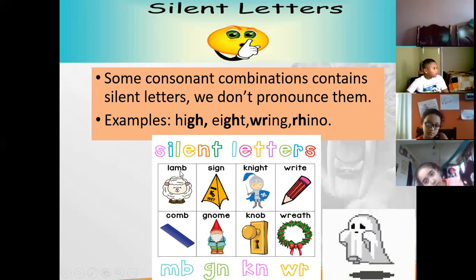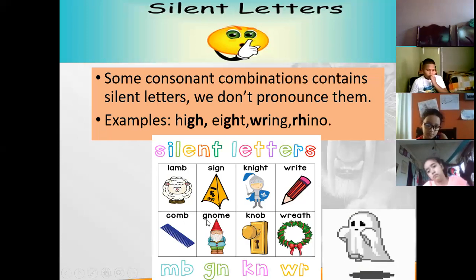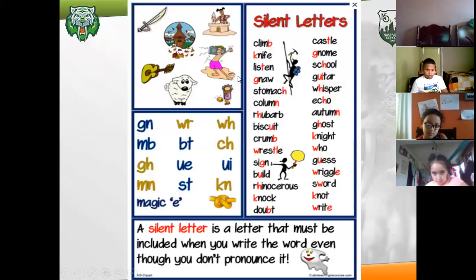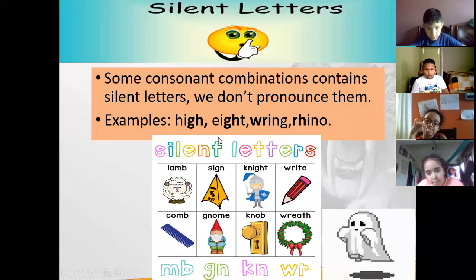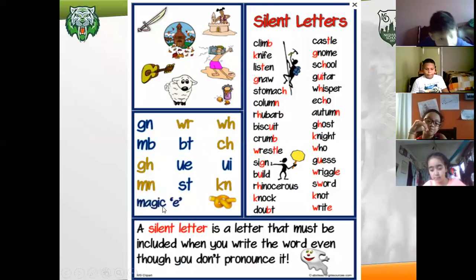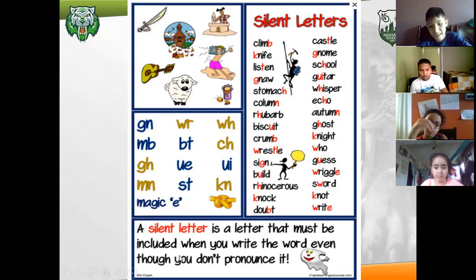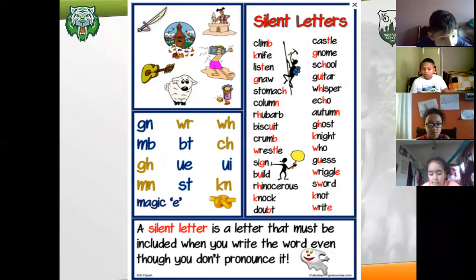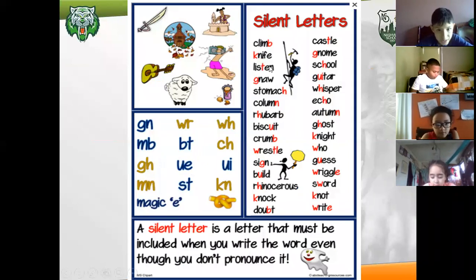Silent letters like lamb, sign, night, right, comb, know. A silent letter is a letter that must be included, because if you don't include it in your writing you have a spelling mistake, even though they aren't included in the sound. They are silent letters. Look at this one, for example: listen. The letter T is a silent letter in here.